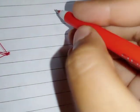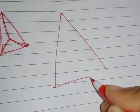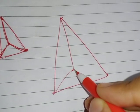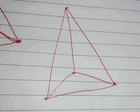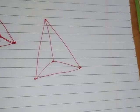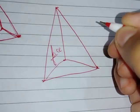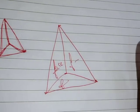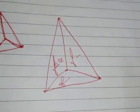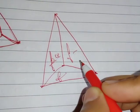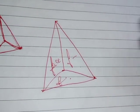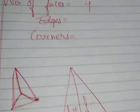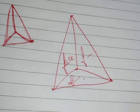Now we have to answer the number of faces, edges, and corners. I'll make a fresh triangular pyramid — here is a triangle and then the edges. The number of faces: how many faces can we see? There are three faces in front — this is one face, then another face, then a third face. When we turn this triangular pyramid, we get a face at its back also. So one, two, three, and one more at the back — all in all we have four faces.